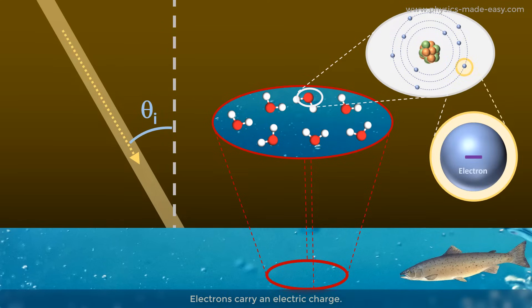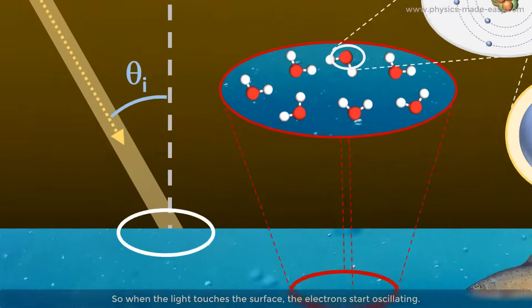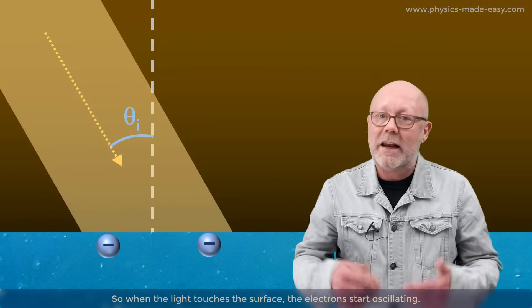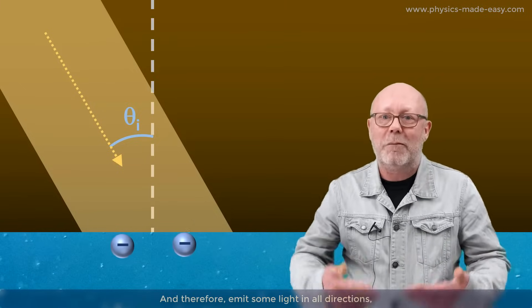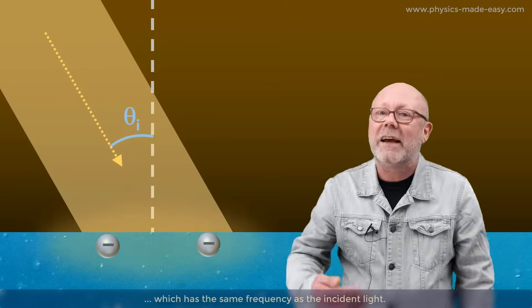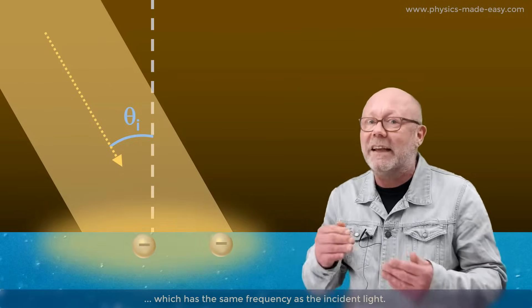Electrons carry an electric charge. So when the light touches the surface, the electrons will start oscillating, and therefore emit some light in all directions, which has the same frequency as the incident light.